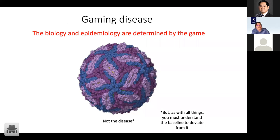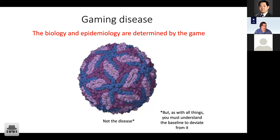Now: where do you get your information and why does it matter? When thinking about your scenario for gaming disease, the biology and the epidemiology of the disease are determined by the game, not the disease. But with all things, you must understand the baseline in order to deviate from it. Really, the requirements of the game are going to be the best way to determine what you want your disease to do — whether it's a game about initial decision-making or about how they exist in a post-catastrophic world where infrastructure is beginning to fail.